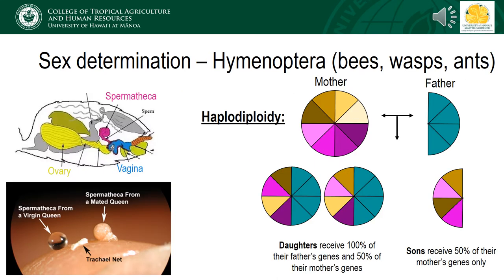Now, because being a mother isn't stressful enough, unlike humans, bees have the additional burden of having to choose whether or not an egg they lay will develop into a male or female offspring, something which is biologically unique to bees, wasps, and ants. This is a sex determination system referred to as haplodiploidy. Female hymenopterans — or all bees, wasps, and ants — have an organ referred to as a spermatheca, pictured at the top left in pink.